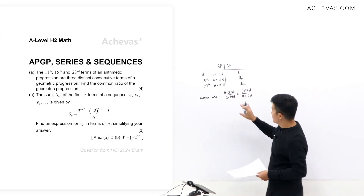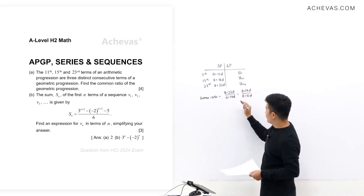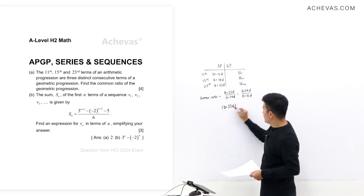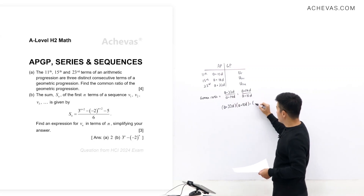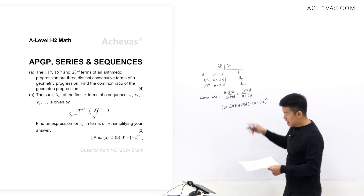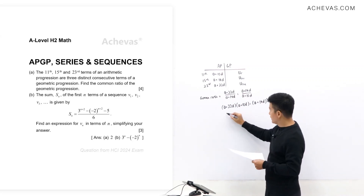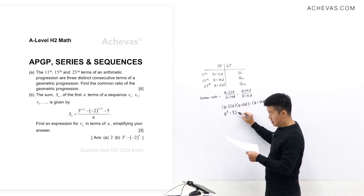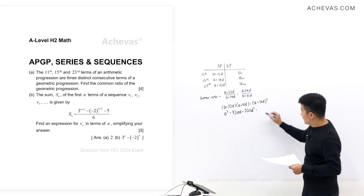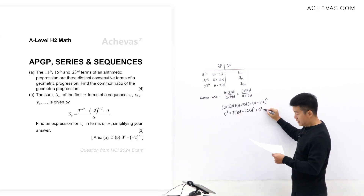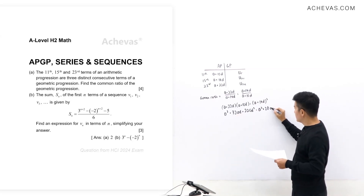Cross-multiplying, we get (a + 22d)(a + 10d) = (a + 14d)². Expanding the left-hand side gives a² + 32ad + 220d², and expanding the right-hand side gives a² + 28ad + 196d².